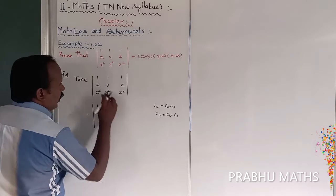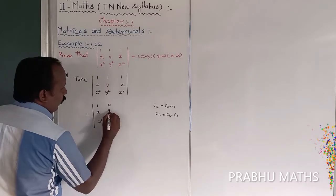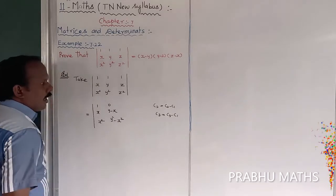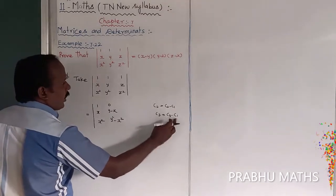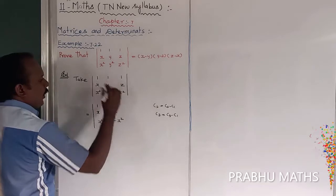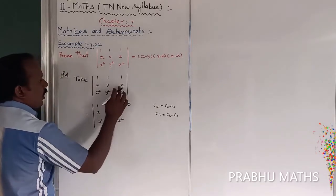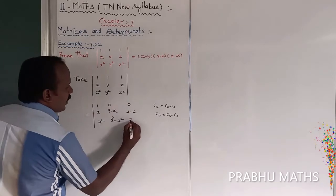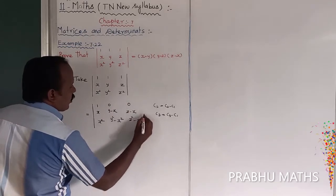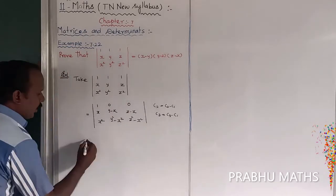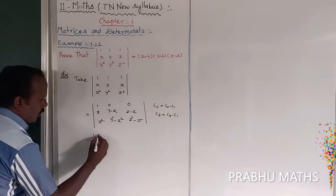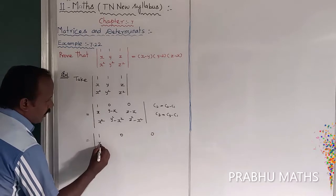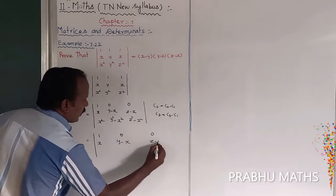After subtracting C1: the first entry becomes 0, next entry is (y − x), and next is (y² − x²). For C3 − C1: the first entry becomes 0, next is (z − x), and next is (z² − x²). So the new matrix has first row [1, 0, 0], second row [x, y−x, z−x].